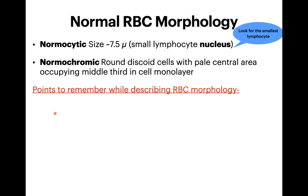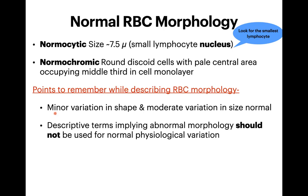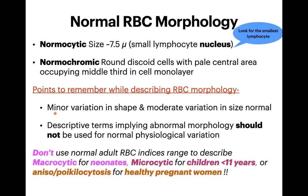When describing RBC morphology, keep in mind that the normal shape is discoid. Minor variation in shape is fine, and a moderate variation in size is normal for a healthy adult. Descriptive terms implying abnormal morphology should not be used for normal physiological variation. For example, neonates have higher MCV than adults, but you don't describe them as macrocytic because that is normal for neonates.